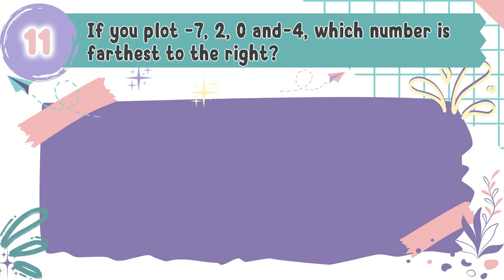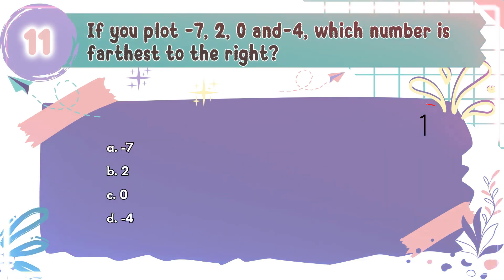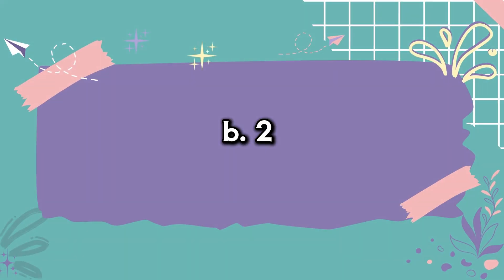Question number 11: If you plot negative 7, 2, 0, and negative 4, which number is farthest to the right? The choices are A. Negative 7, B. 2, C. 0, D. Negative 4. The correct answer is B. 2. The farther a number is to the right on the number line, the greater its value.